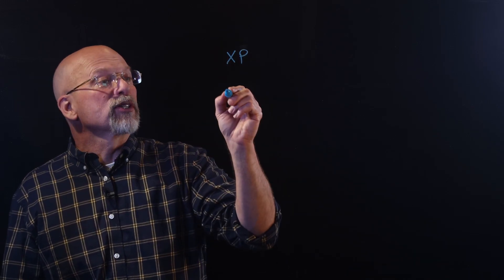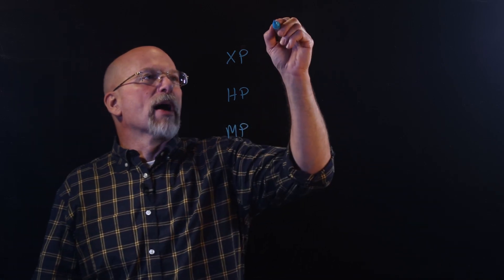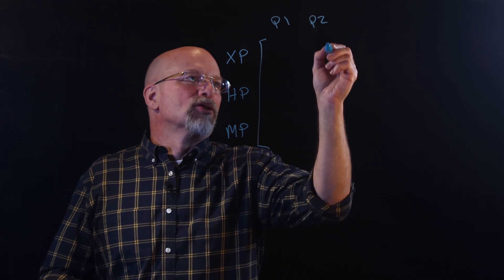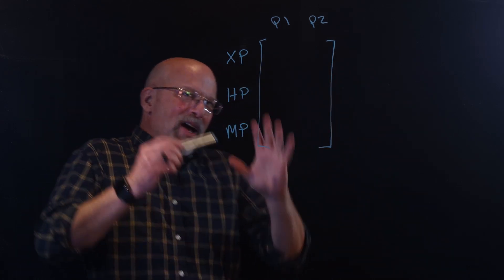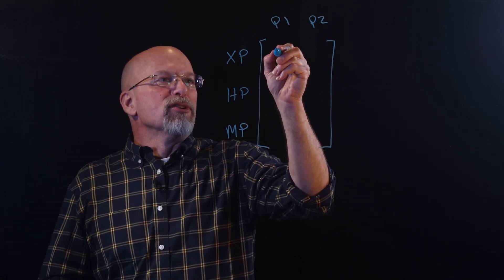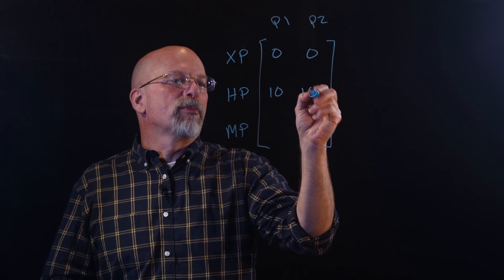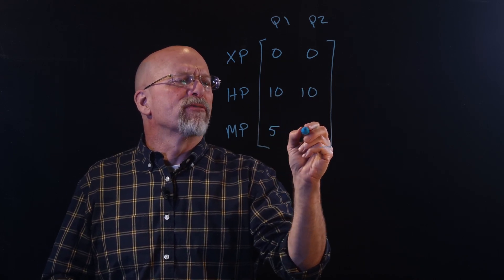Imagine I've created a new two-person game, and each player can have experience points, health points, and mana points. And we've got player one and player two. Now I'm going to draw my little brackets around here to make it look like a matrix. At the beginning, nobody has any experience points. Everybody has ten health points, and let's just say they start out with five mana points.